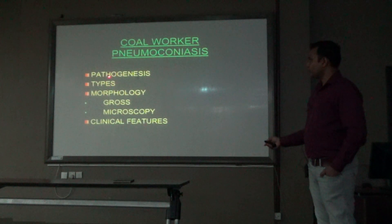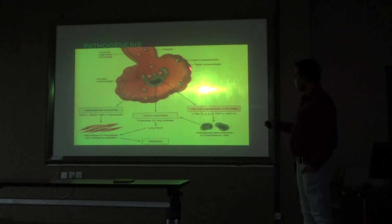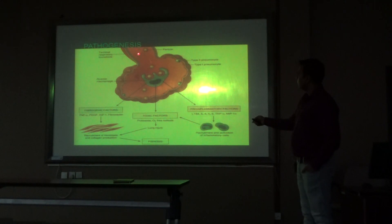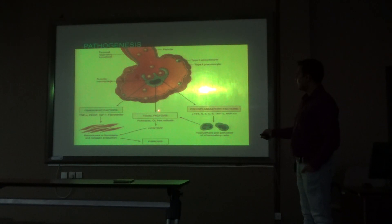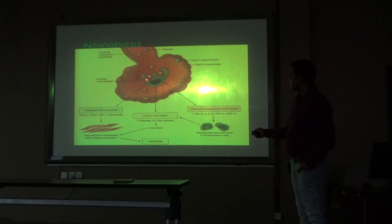For coal worker pneumoconiosis we will cover pathogenesis, types, morphology (gross and microscopic), and clinical features. The pathogenesis diagram shows the alveoli with terminal bronchiole, respiratory bronchiole, type 1 and type 2 pneumocytes, and alveolar macrophages. When an individual inhales any small particle, the alveolar macrophage engulfs it, producing toxic factors such as proteases and oxygen free radicals; neutrophils contribute the same properties.